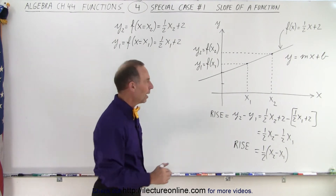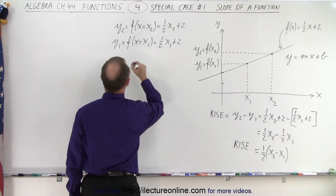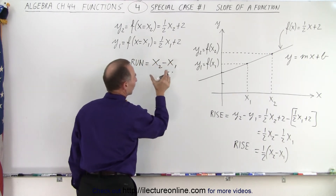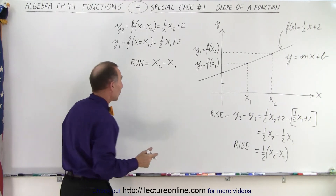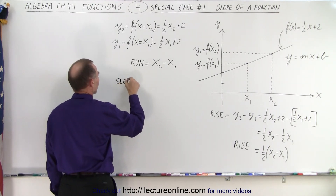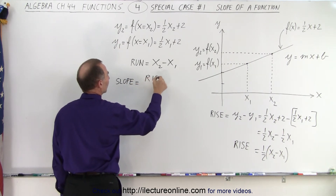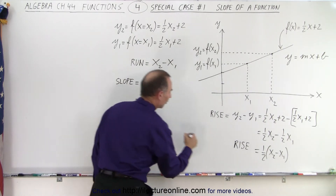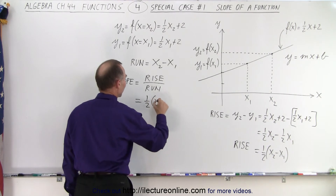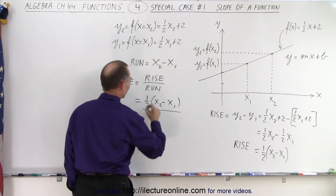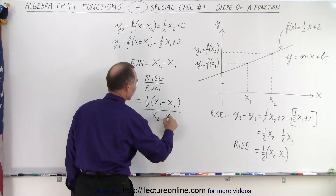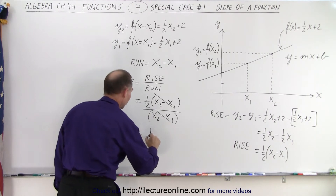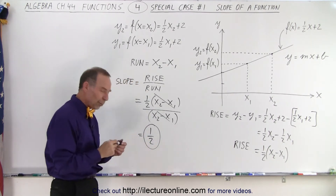Now for the run — how much does the run go from one point to the other? The run is defined by taking the second point and subtracting the first, which is the difference between the two x-values: x₂ minus x₁. So the slope, by definition, is the rise divided by the run: one half times (x₂ minus x₁) divided by (x₂ minus x₁). The (x₂ minus x₁) cancels, and the slope equals one half.